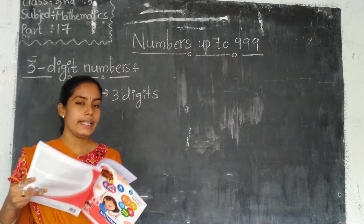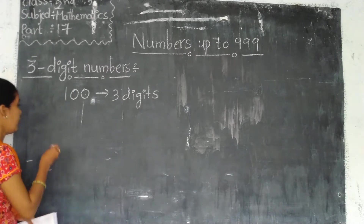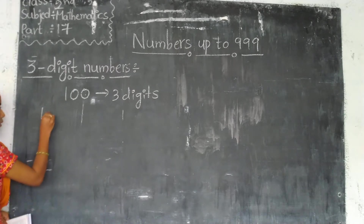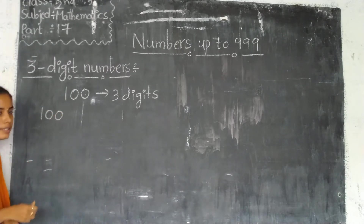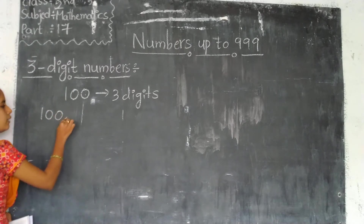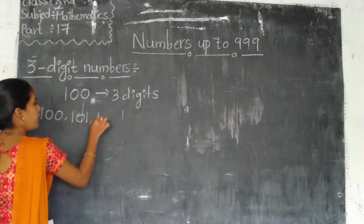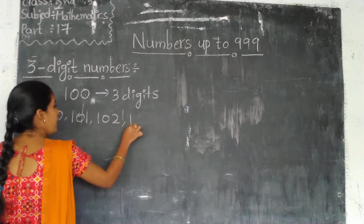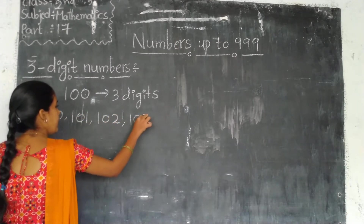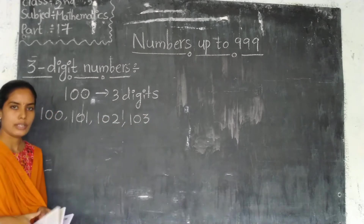3-digit numbers start at 100. Next is 101, 102, 103 — like this we can continue and write. Okay?